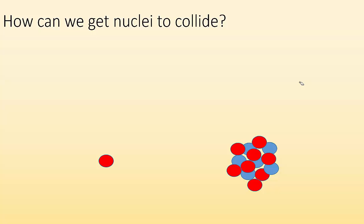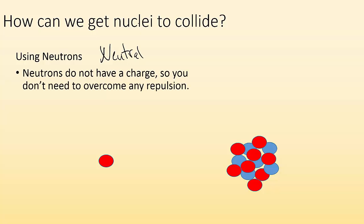All right. So another way, how can we get nuclei to collide? You can use neutrons. What do we know about neutrons? We know that they are neutral. So there's no charge to overcome.